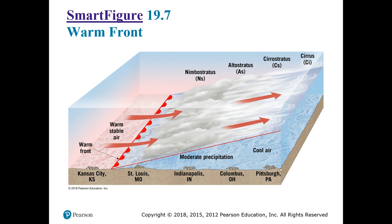First they'll have very high cirrus clouds in their skies, and as the front continues to advance, they'll have cirrostratus, then altostratus — cloud cover coming lower and lower until there's a blanket of dark clouds, and that's going to rain. After the front passes, warmer air is behind it. Kansas City has moved through this front and is now experiencing warmer stable air. After a warm front passes, know that we have warm air behind it.